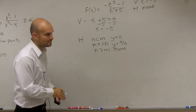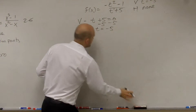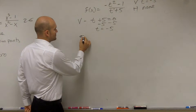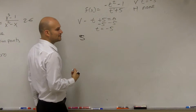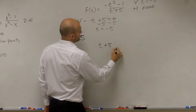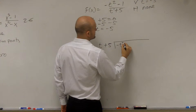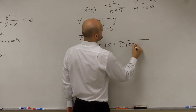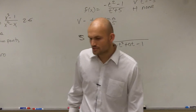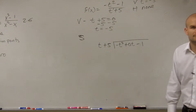So I'm just going to write none. When we have no horizontal, we have a slant. To find the slant, we have to use long division. So I'm going to write t plus 5 divides into negative t squared plus 0t minus 1. I'm going to put the 0t in there as a placeholder so I don't get confused.